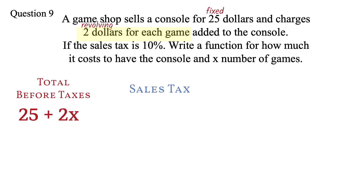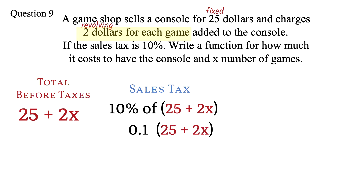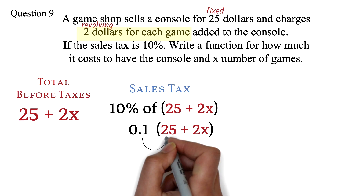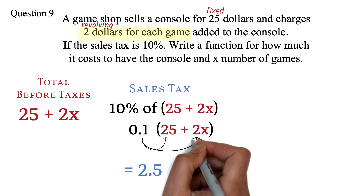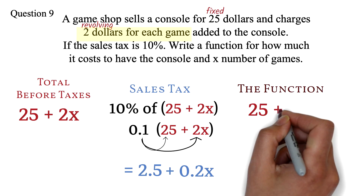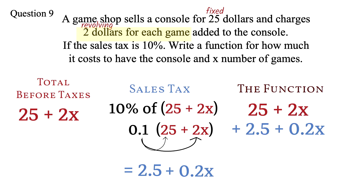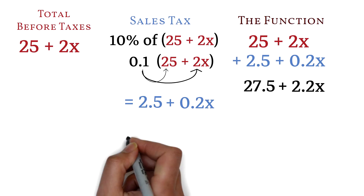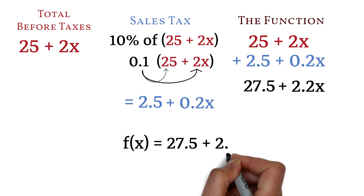Now let's find the sales tax. The sales tax is 10% of the total, so 0.1 times 25 plus 2x. We expand: 0.1 times 25 is 2.5, and 0.1 times 2x is 0.2x. Adding everything together: 25 plus 2x plus 2.5 plus 0.2x. Combining like terms, 25 plus 2.5 is 27.5 and 2x plus 0.2x is 2.2x. So the function is f(x) equals 27.5 plus 2.2x.